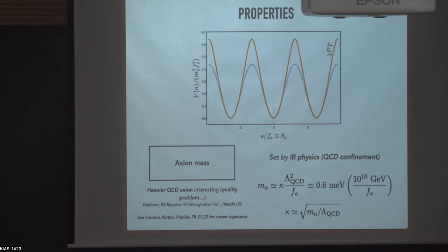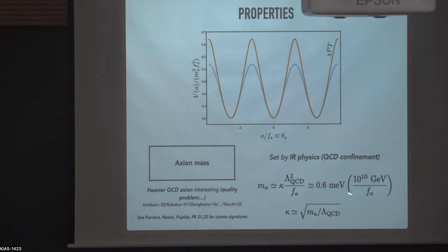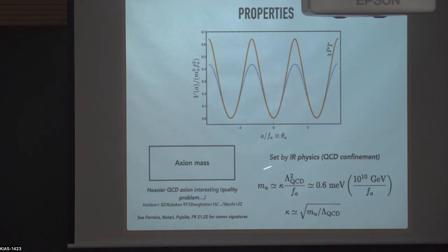Two important properties of the QCD axion: first, the mass is set by IR physics — QCD confinement. It is proportional to lambda_QCD squared over f_A, where f_A is the axion decay constant. For f_A around 10^{10} GeV or larger, the axion mass will be very small — of order milli-electron volts or smaller, always sub-electron volt. There is also the possibility of a heavy axion, but this talk focuses on the standard light QCD axion.